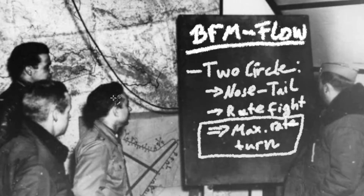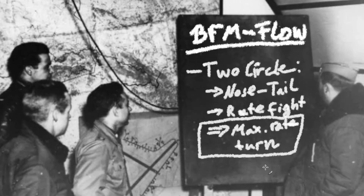Now if we look at a two circle scenario, we have a nose-to-tail configuration where the two aircraft chase each other. The two circle flow — also called a rate fight — means we will have to maximize our turn rate by performing a max rate turn. This could be instantaneous turn rate or sustained turn rate. Obviously we want to go for a sustained turn rate the lower we go, because to perform a maximum instantaneous turn rate turn we will lose energy and will have to give up altitude to sustain it.